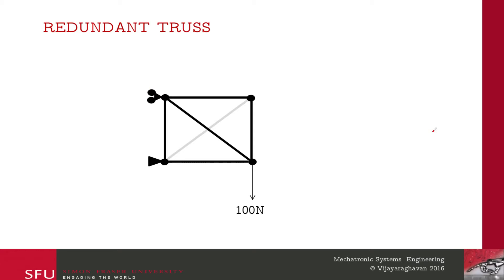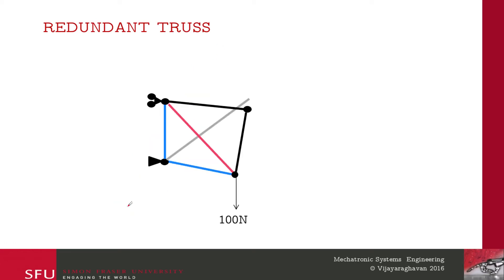Imagine we remove one of the diagonal links. If I apply a 100 Newton force, the remaining links shown in red are going to be in tension, while the two links over here are in compression. This causes some minor deformation - this link becomes shorter while the diagonal link actually becomes longer. My final structure looks deformed, and now I need to figure out a way to insert the missing link back in.